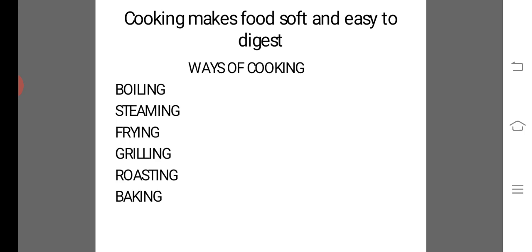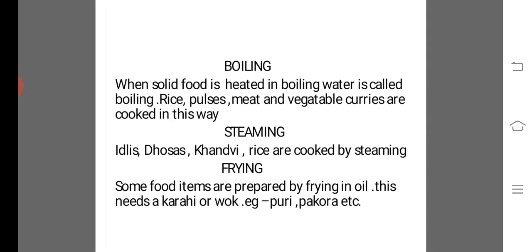There are different ways by which cooking takes place. A few are: boiling, steaming, frying, grilling, roasting, and baking. Let's start with boiling — boiling is a technique when food is heated in boiling water.